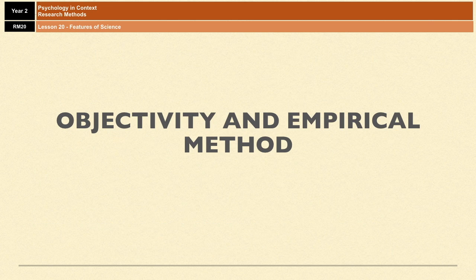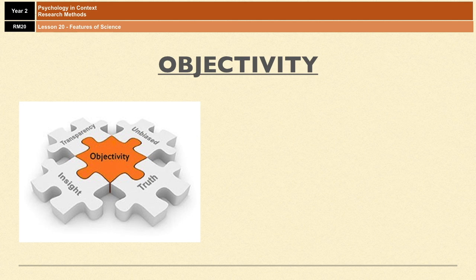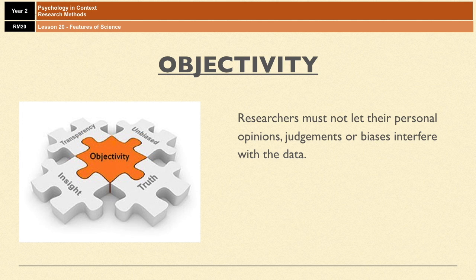Let's make a start with objectivity and the empirical method. A key feature of science is the ability for researchers to remain objective, meaning they must not let their personal opinions, judgments, or biases interfere with the data they're gathering. In psychology, lab experiments are the most objective method because of the high level of control over variables, whereas natural experiments are less objective as you can't really control the independent variable.